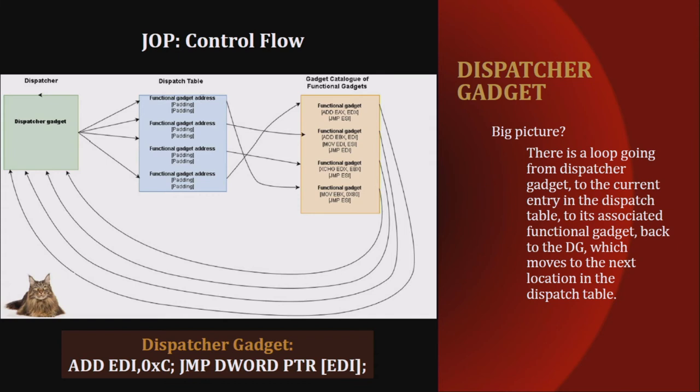Here is a somewhat oversimplified control flow diagram. You have the dispatcher gadget which controls flow into the dispatch table, which then dereferences and calls those different functional gadgets. From there instructions are executed that'll feel a bit like ROP, and then you'll jump or call back to the dispatcher gadget. The cycle will continue to repeat until you've accomplished whatever functionality you're out to get. That's my part — I'm going to let Bramwell take it from there.